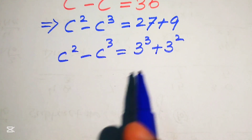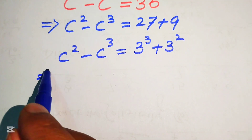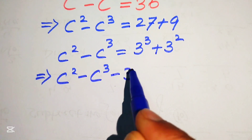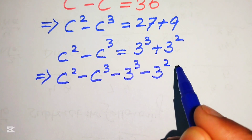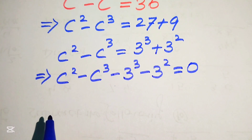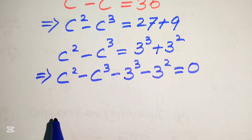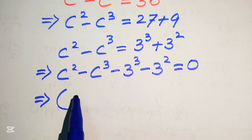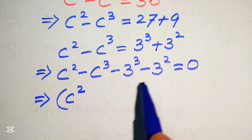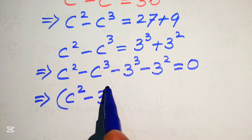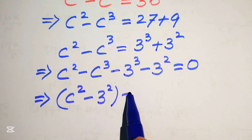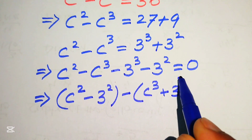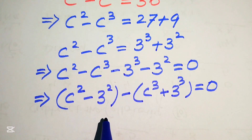We move these two values from the right-hand side to the left-hand side, giving us c squared minus c cubed minus 3 cubed minus 3 squared equals 0. Now we make pairs of the square terms and the cubic terms. The square terms are c squared and 3 squared; we take out a negative sign common from the cubic terms to get c cubed plus 3 cubed, giving the full equation equal to 0.